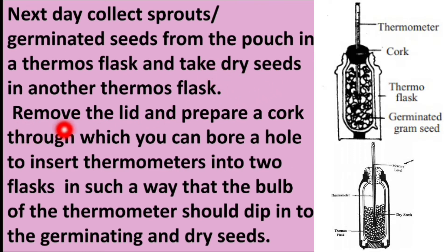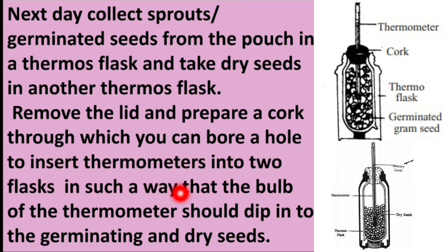Remove the lid and prepare a cork through which you can bore a hole to insert thermometers into the two flasks, in such a way that the bulb of the thermometer should dip into the germinating and dry seeds.